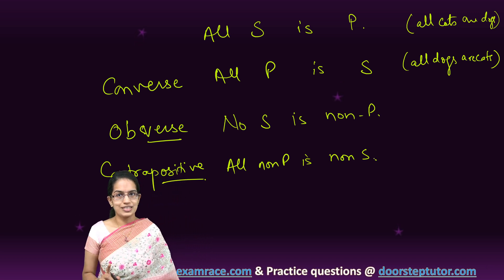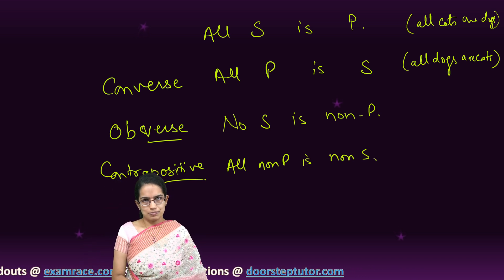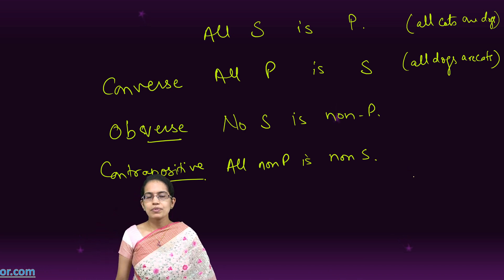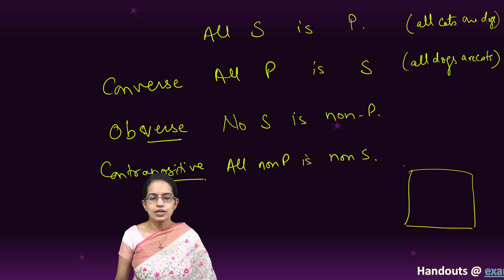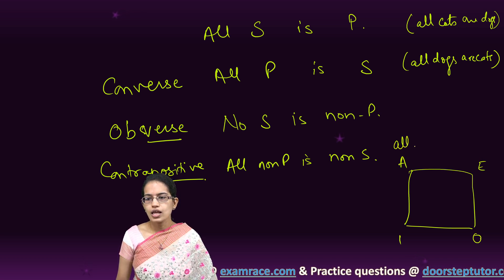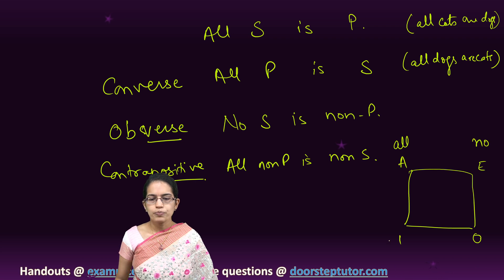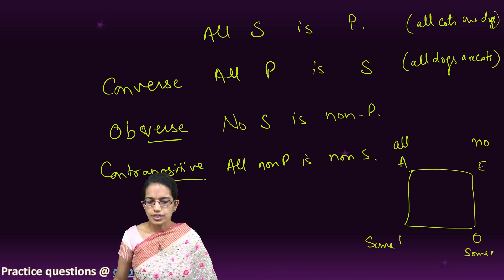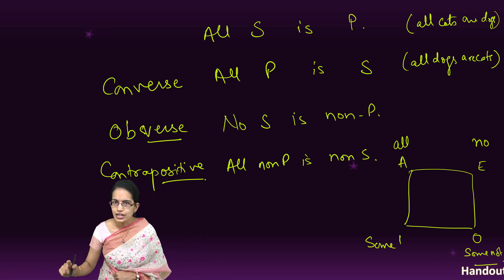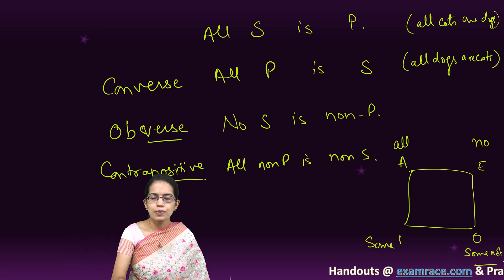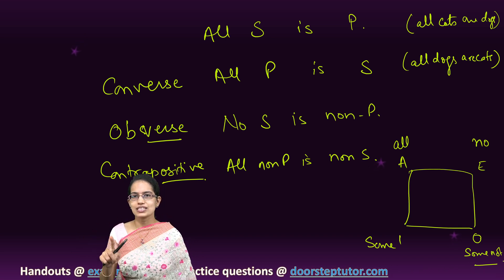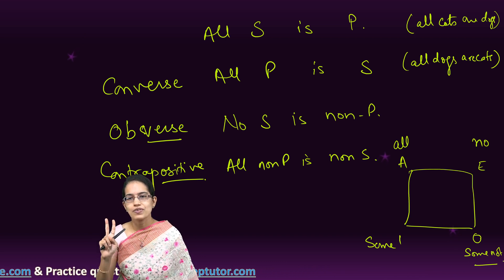Now, the most interesting part: under categorical propositions, each of the cases A, E, I, and O — do you remember what A, E, I, and O are? A is 'all,' E is 'no,' I is 'some,' and O is 'some not.' For each of these cases, what we would be doing is finding the converse, obverse, and contrapositive. But interestingly, in each of these cases, only two of those would be valid each time.